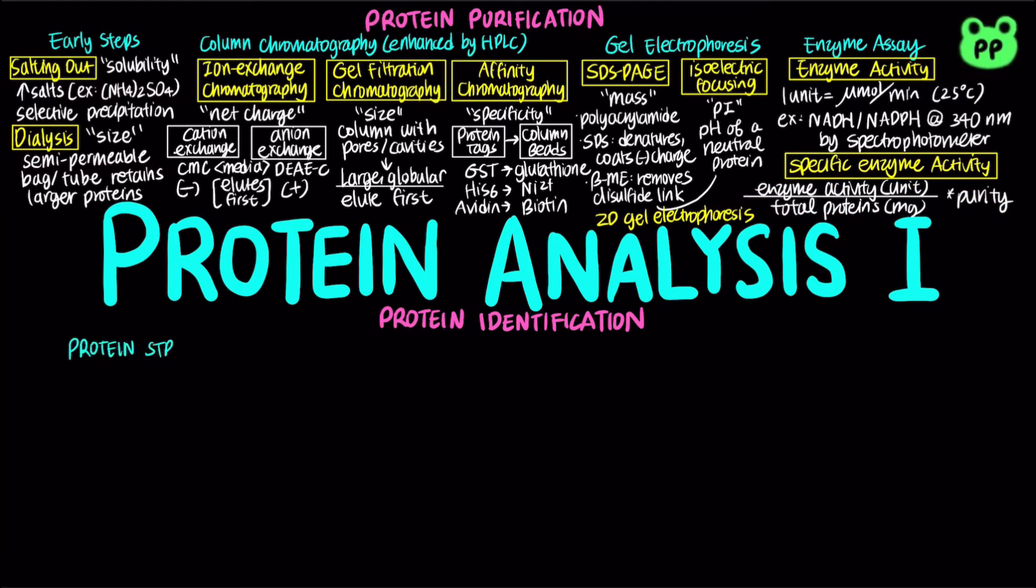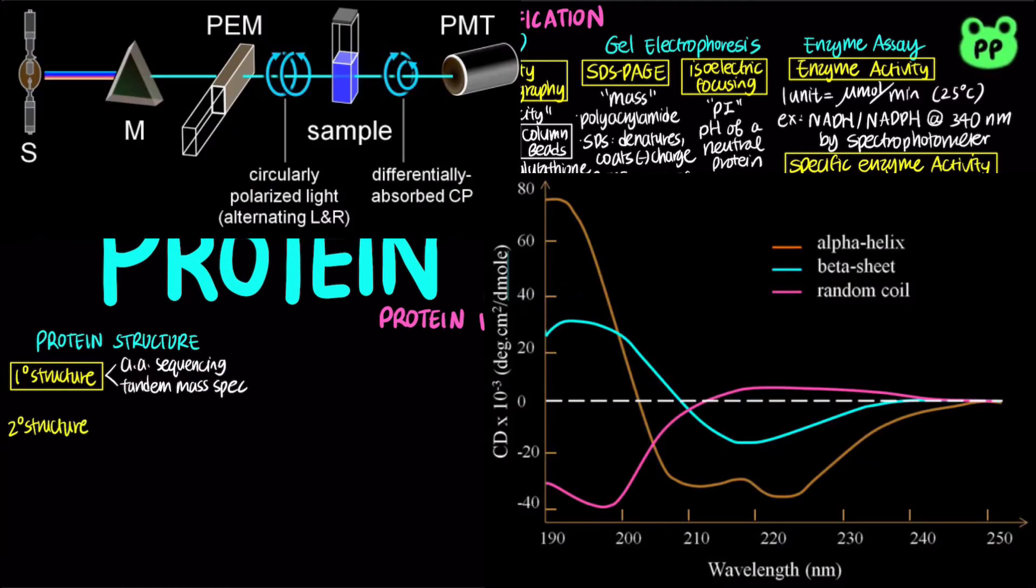A protein's primary structure can be determined by amino acid sequencing or tandem mass spectrometry, which will be talked about in a moment. A protein's secondary structure can be measured by circular dichroism spectroscopy, which measures the differences in absorption of left-handed versus right-handed circularized light. The alpha helix and beta conformations each have characteristic circular dichroism spectra.